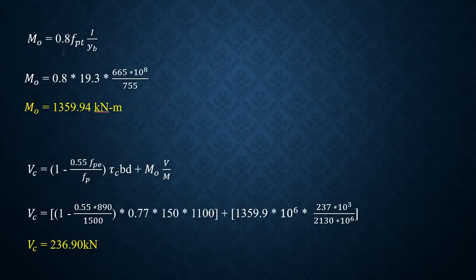Next is calculation of M0. M0 = 0.8 × fpt × I/yb. Here the general formula is I/y, but particularly I have considered it as yb. Why did I take yb? Because the cables are provided at the bottom. So for that reason, even though they have given yt as well as yb, we should consider yb. Substitute the values: M0 = 0.8 × 19.3 × 665 × 10⁸/755. Therefore M0 = 1359.94 kN-m.